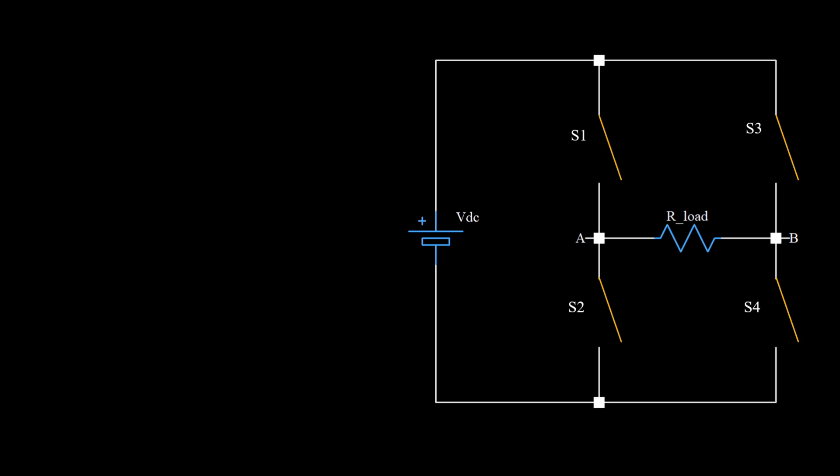Here, we have a resistive load and we will replace it with our motor later. Now, if I switch S1 and S4 on at the same time and keep S2 and S3 off, node A will see VDC whereas node B will see ground. So, the voltage across the resistor is VDC and current will flow from A to B.